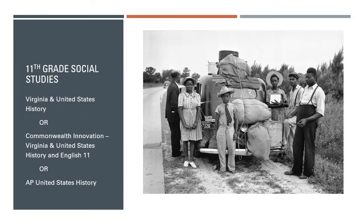Students in 11th grade can choose from Virginia and United States History, Commonwealth Innovations Virginia and United States History in English 11, or AP United States History. In all three courses, students study America's past starting with the pre-Columbian era and American Indian civilizations, continuing all the way through the present day. The courses all foster students' critical thinking skills, helping them develop a deep understanding of America's past and their place in America's past, present, and future. Commonwealth Innovation combines English 11 so students look at America's past with literature and develop their writing and reading skills alongside the American history content. All three courses offer students the opportunity to take a Standards of Learning test should they need to.